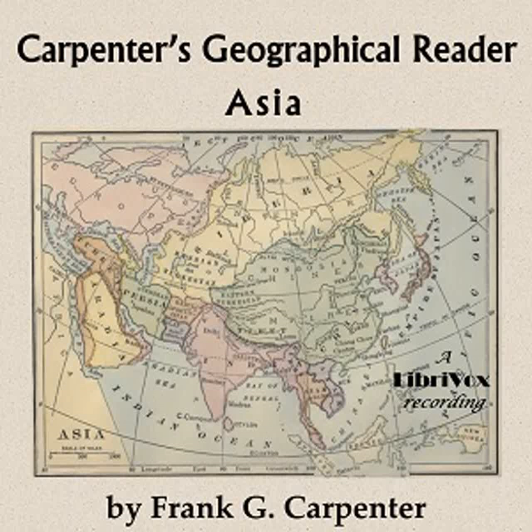These include two journeys around the world, during each of which Asia formed a large part. Many of the descriptions were written on the ground amid the scenes pictured, and the most of the illustrations are from photographs made by the author especially for this volume. To make the text easier to read, the pronunciation of the more difficult geographical names and foreign words is indicated using Webster's diacritical marks.